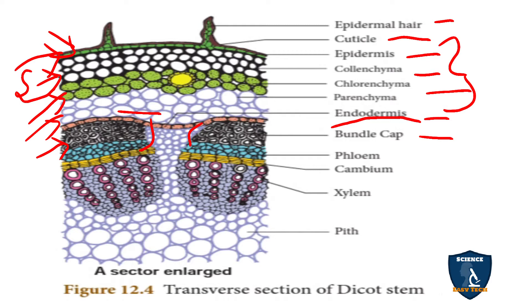Next is the vascular bundle, which contains phloem, cambium, and xylem. It is a conjoint, collateral, open vascular bundle — meaning xylem and phloem are on the same radius forming a bundle. Cambium is present between xylem and phloem, so it is called open. The shape of the vascular bundle is wedge-shaped or cone-shaped, and the xylem elements are arranged in a linear order.